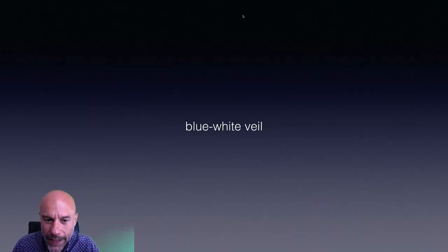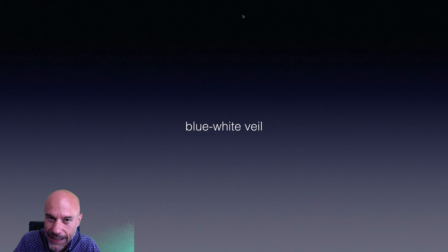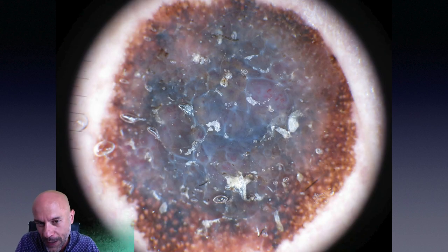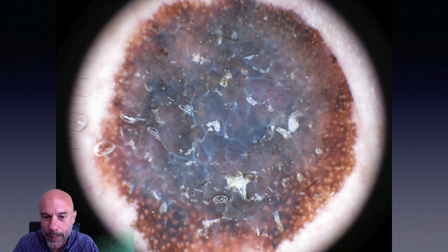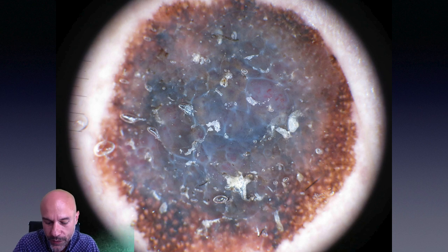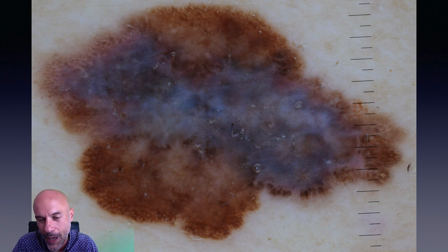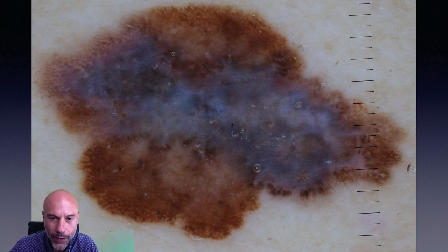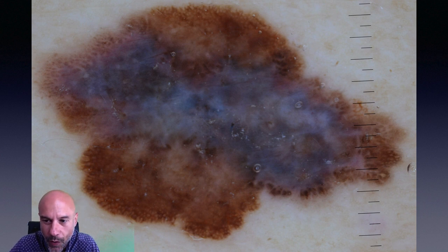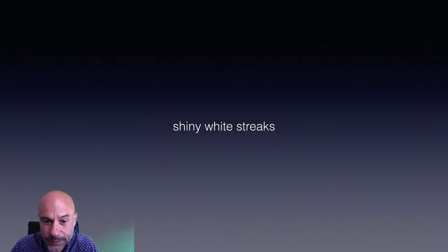A few more melanoma criteria are easy to recognize because they are mainly seen in advanced melanoma. The so-called blue-white veil — this combination of blue and white translucent color — is of course highly suspicious for melanoma. Here is one more example; it is quite straightforward to our eyes, and it corresponds to advanced melanoma, as blue color means there are melanocytes deep in the dermis.